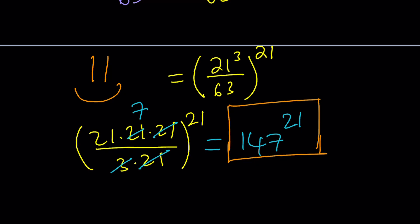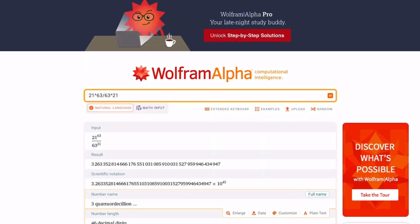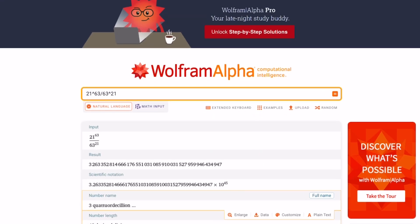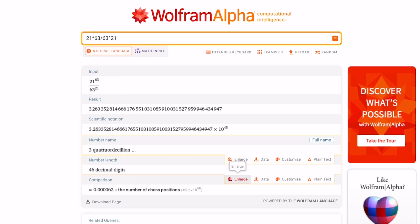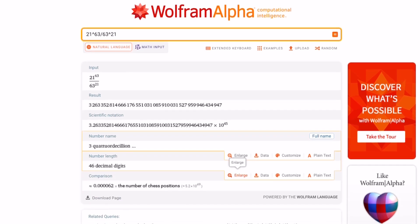Let's take a look at the numerical value from Wolfram Alpha to see how big these numbers are. So here's what the numbers look like when you divide 21 to the power of 63 by 63 to the power of 21. You get something that looks like this. It's 3 quattuordecillion with 46 decimal digits. And it's about 0.000062 times the number of chess positions. Wow, that's crazy. Look at the number of chess positions. Anyways, let's go back and finish this problem up.